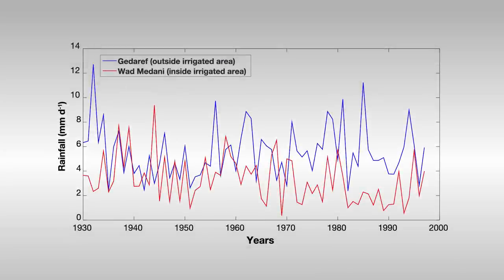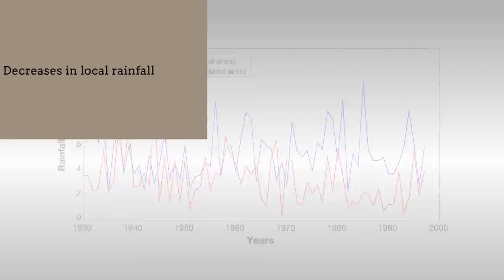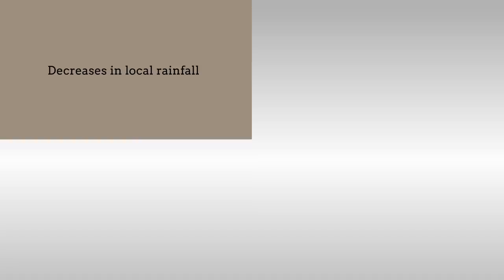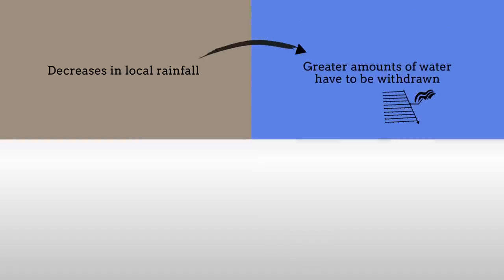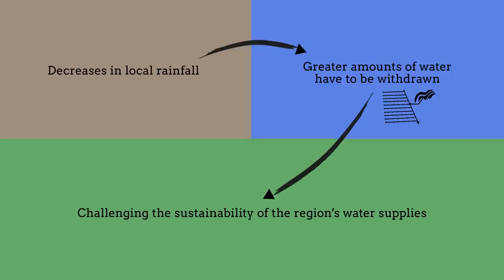Together, the historical values and model results provide strong evidence that irrigation in the semi-arid Sahel alters local rainfall patterns, with potentially significant consequences for agriculture. Decreases in local rainfall caused by irrigation mean that greater amounts of water have to be withdrawn during the growing season, challenging the sustainability of the region's water supplies.